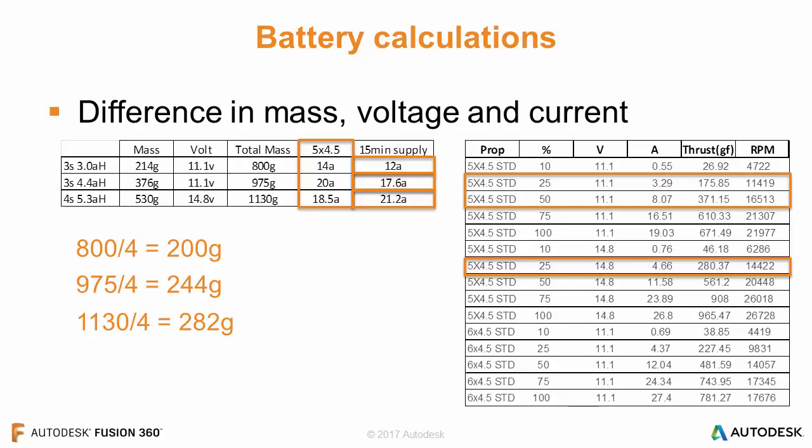At 280 grams that is a 1-to-1 thrust ratio at 25% throttle. At 50% we have 561 grams per motor; at 75% we have 908 grams; and at 100% throttle each motor provides 965 grams of thrust — meaning one motor can almost lift the entire craft alone. This gives us roughly a 4-to-1 thrust ratio, allowing great maneuverability and speed when needed, then we can reduce throttle to roughly 25% to hover and survey areas.